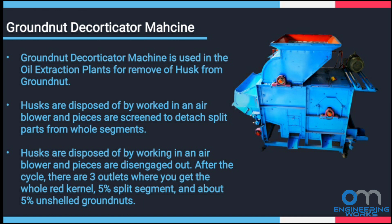After the cycle, there are three outlets where you get the whole red kernel, 5% split segments, and about 5% in-shell groundnuts.